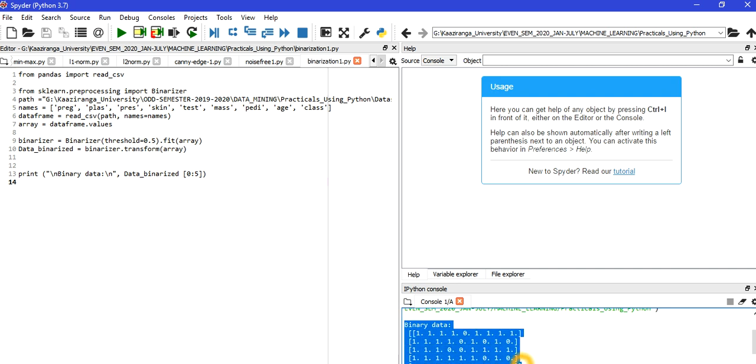So all the values. See, 5. Only 5. I have specified here. So that's why 5 lines are shown to you. 5 lines. And there you will see that only the values are in 0 or 1.